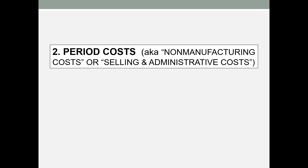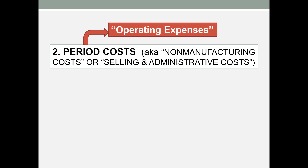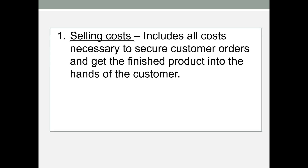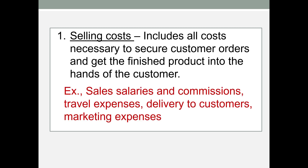Period costs are non-manufacturing costs. Selling and administrative costs are what we're talking about here — they're often called operating expenses. All of these terms are synonymous: period costs, operating expenses, selling and administrative costs. They include selling costs — anything to secure the customer order and get the finished product to the customer. Examples would be sales salaries and commissions, travel expenses, salesman's auto expenses, delivery to customers, and marketing and advertising.